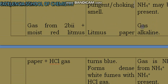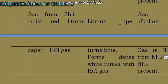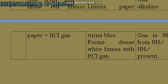Then gas is ammonia from ammonium ion—don't say ammonium ion is present, and don't say ammonia gas is present. Gas is ammonia from ammonium ion, so ammonium ion is present.